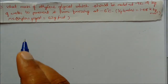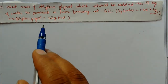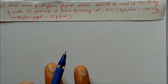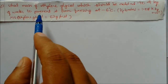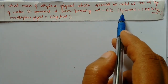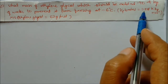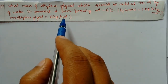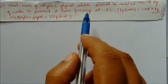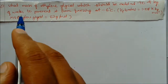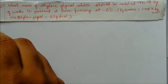We will see problems based on depression in freezing point. What mass of ethylene glycol should be added to 4 kilograms of water to prevent it from freezing at minus 6 degree centigrade? Kf of water is given as 1.86, and the molar mass of ethylene glycol is 62 grams per mole. This question is totally formula-based, so every value is given.